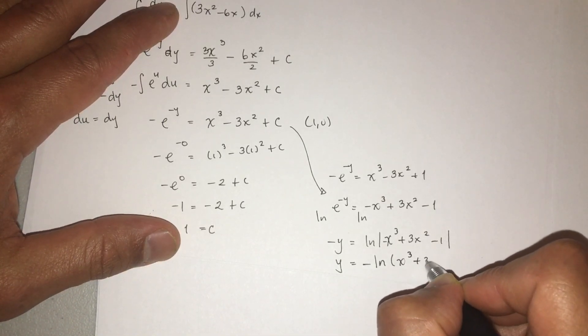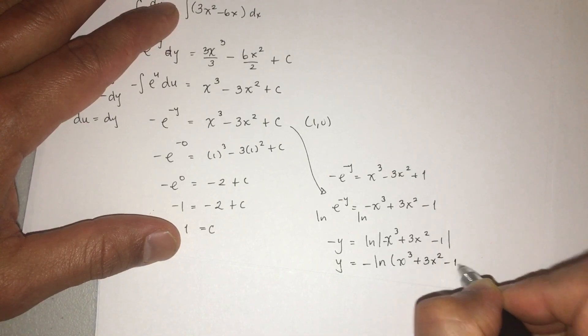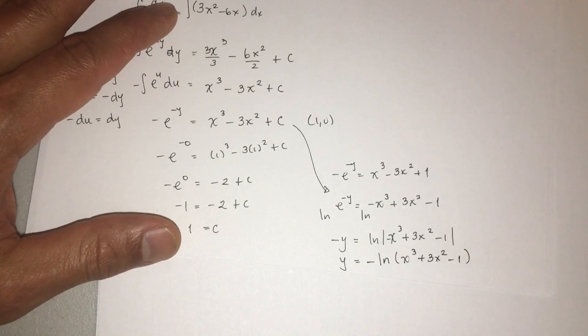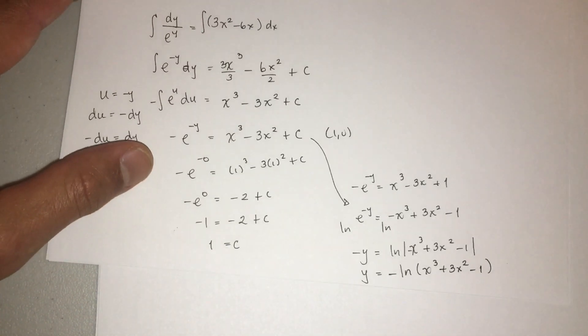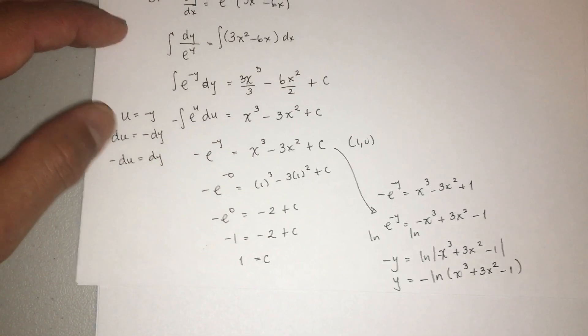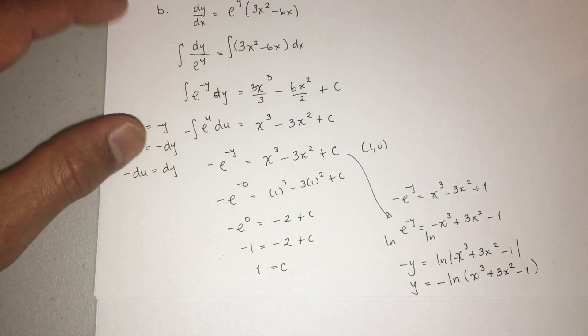So we're going to get -e^(-y) = x^3 - 3x^2 + 1. Now we have to solve for y. So I'm going to divide everything by negative. So we get e^(-y) = -x^3 + 3x^2 - 1. Good. Now we've got to exponentiate. Take the ln on both sides to get rid of that guy. Or take the log on both sides. So log of e is going to simplify it out. So we're going to get -y = ln(-x^3 + 3x^2 - 1). Last thing I've got to do is just bring that negative across. y = -ln(-x^3 + 3x^2 - 1).